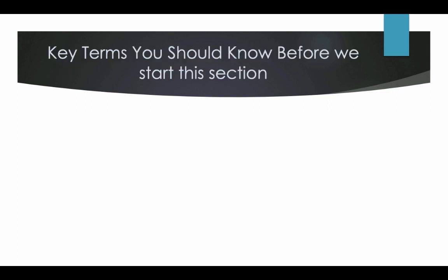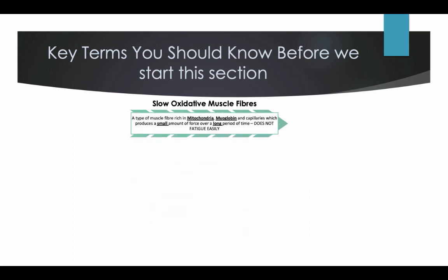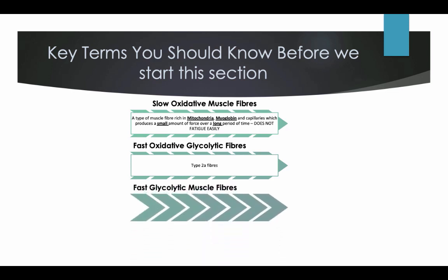Key terms you should know before we start this section. Slow oxidative muscle fibres: a type of muscle fibre rich in mitochondria, myoglobin and capillaries, which produce small amounts of force over long periods of time and do not fatigue easily. Fast oxidative glycolic fibres: type 2A fibres. Fast glycolic muscle fibres: a type of muscle fibre rich in phosphocreatine which produces maximum force over a short period of time and fatigues easily.